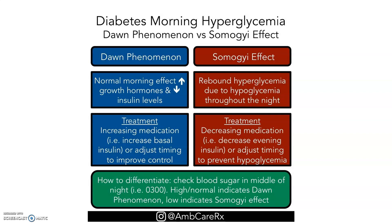How can you differentiate between the two? Because in the morning, if it's the Dawn phenomenon, the blood glucose is high, and if it is the Somogyi effect, when they wake up in the morning, the blood glucose is also high. To differentiate, you will check the blood glucose in the middle of the night, early in the morning, around 3 a.m. If it is normal or high, it indicates the Dawn phenomenon. But if it is low, it indicates the Somogyi effect.